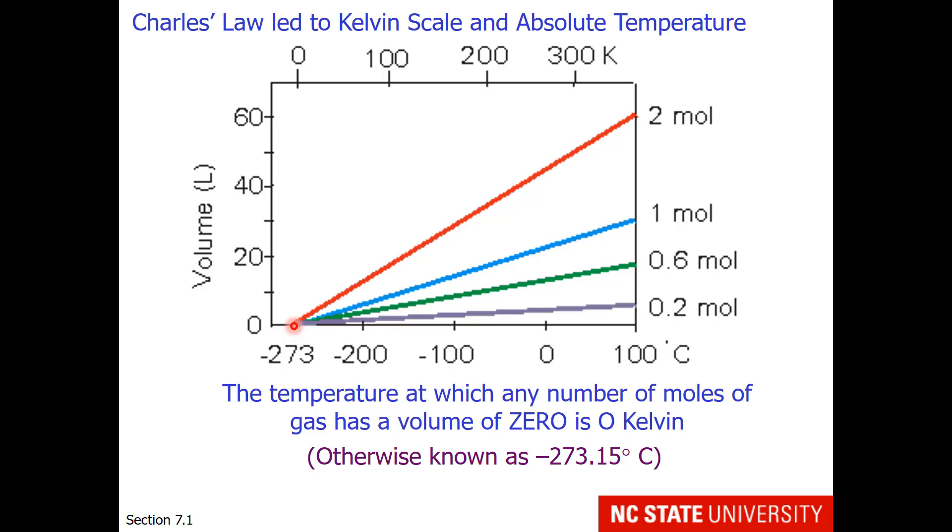It is the absolute coldest temperature that can be reached, and many scientists have tried throughout the years. I believe we've gotten down to about 0.02 degrees kelvin, but certainly have never gone to negative kelvin degrees. Kelvin cannot be negative.